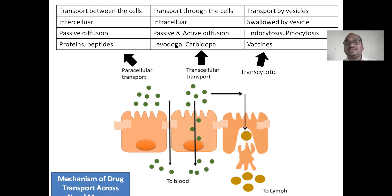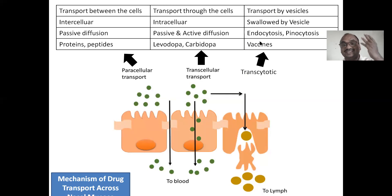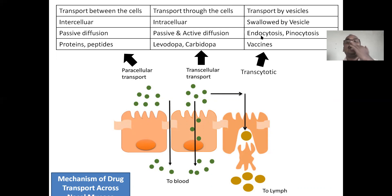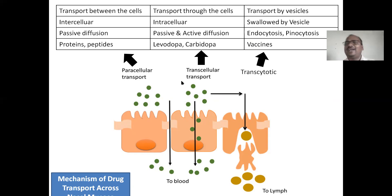Third is transcytosis — just like endocytosis and pinocytosis, which is cell eating and cell drinking. Nasal vaccines are absorbed by this route. We have now developed nasal vaccines for COVID-19 as well. These vaccines are absorbed by transcytosis — specifically pinocytosis, because the vaccine is a liquid. Vesicles are formed, which take up the drug particles and deliver them, just like phagocytosis in the immune system.